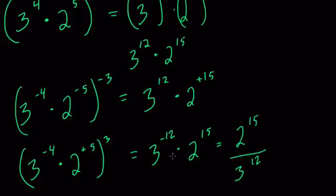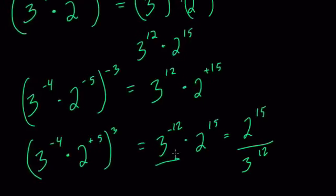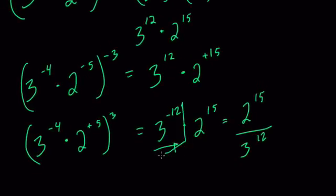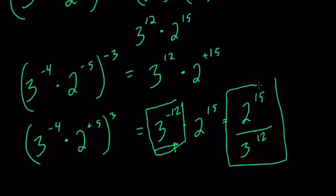In this case, that's because a negative exponent refers to division, or you can think of this as 1 over 3 to the 12th times 2 to the 15th, which would still be this right here.